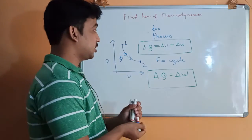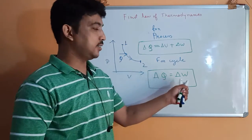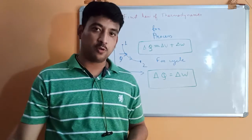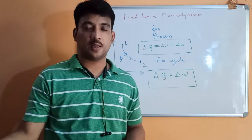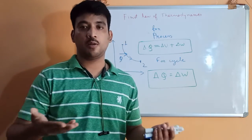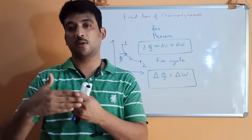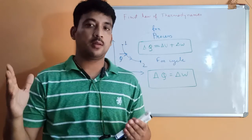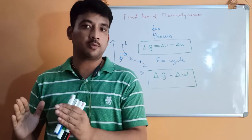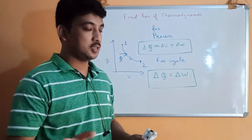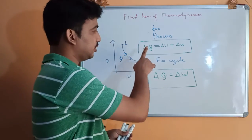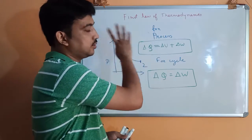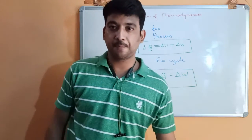Say that for a cycle, ΔQ = ΔW, and for a process, DQ = DU + DW. That statement — energy cannot be created or destroyed, it can be converted from one form to another — is also true, but the answer the mechanical engineering professor is looking for is this.